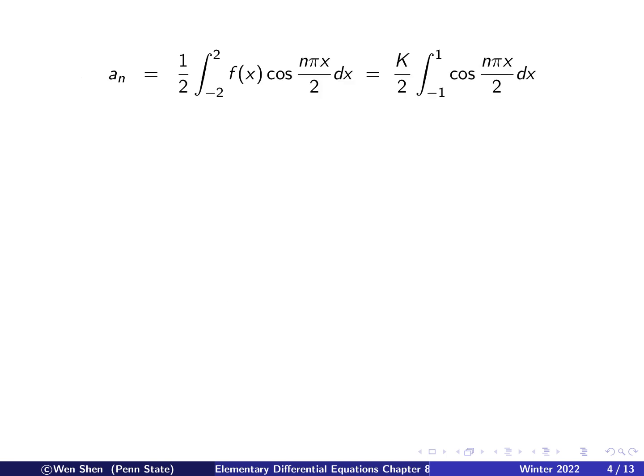Now let's compute aₙ for n bigger than or equal to 1. So first, that's the formula. And then we recognize that this is non-zero only from negative 1 to 1. And therefore, we only integrate from negative 1 to 1. And this function is a constant K, which we can take outside the integration sign. So we need to integrate a cosine function. Let's work out the detail. So the integral of cosine is sine function. And then you have to flip the coefficient here. You get 2 over nπ. And the sine function is evaluated from negative 1 to positive 1.